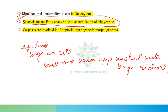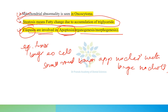Steatosis means fatty change due to accumulation of triglycerides. Caspases are involved in apoptosis, organogenesis, and morphogenesis.